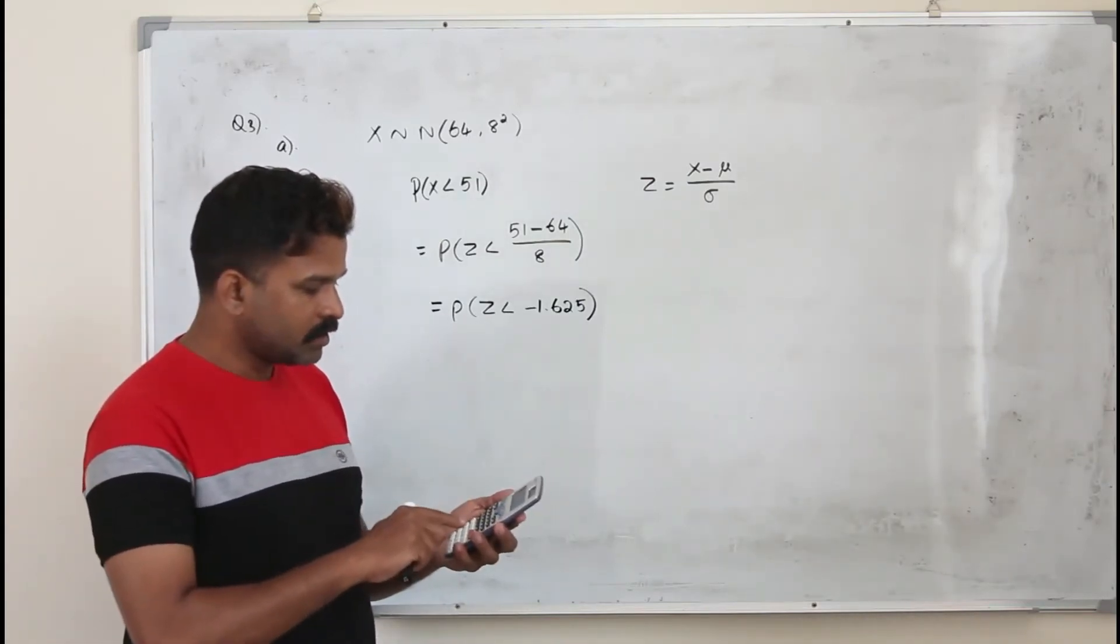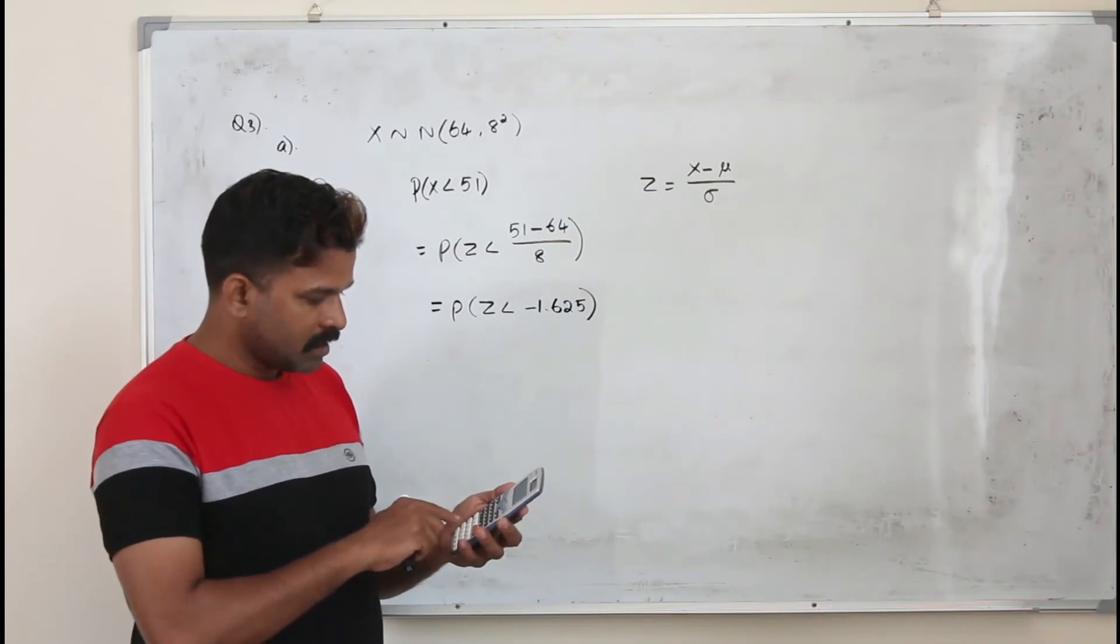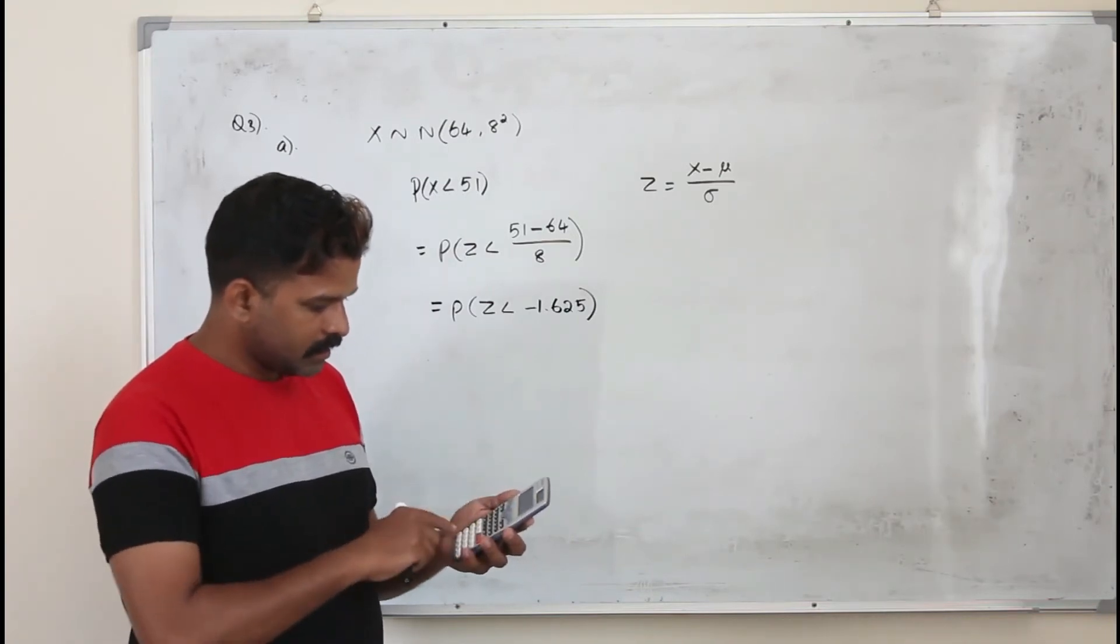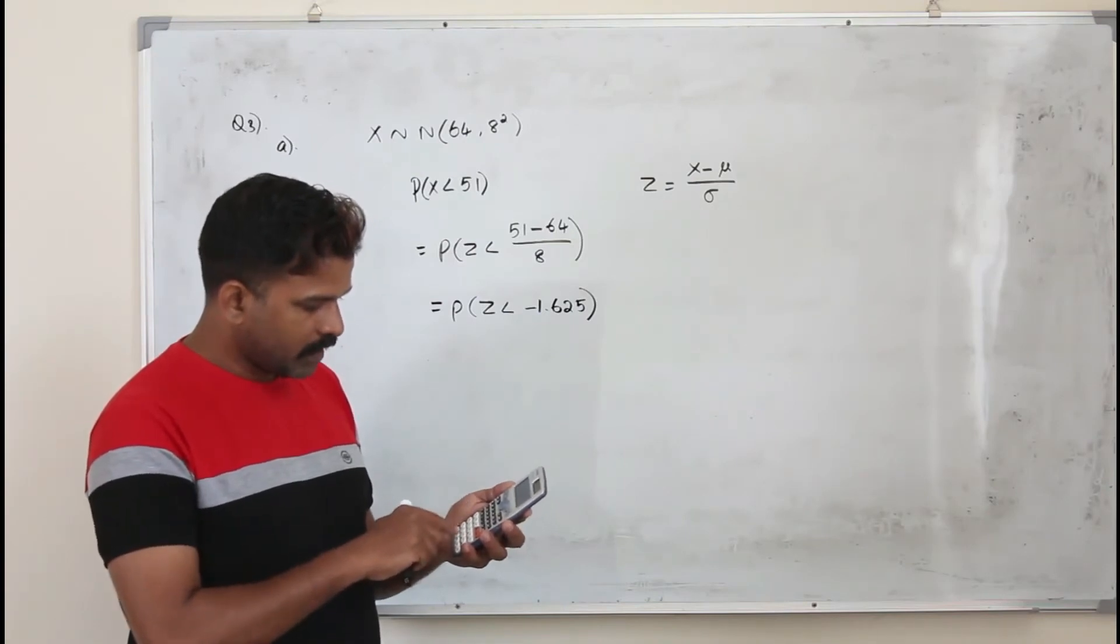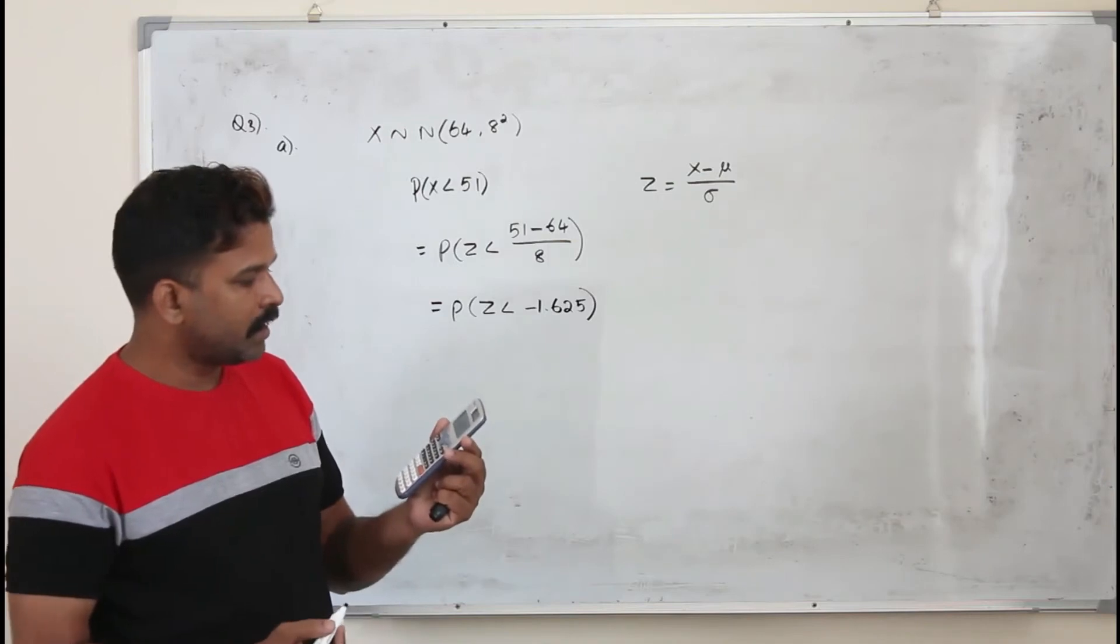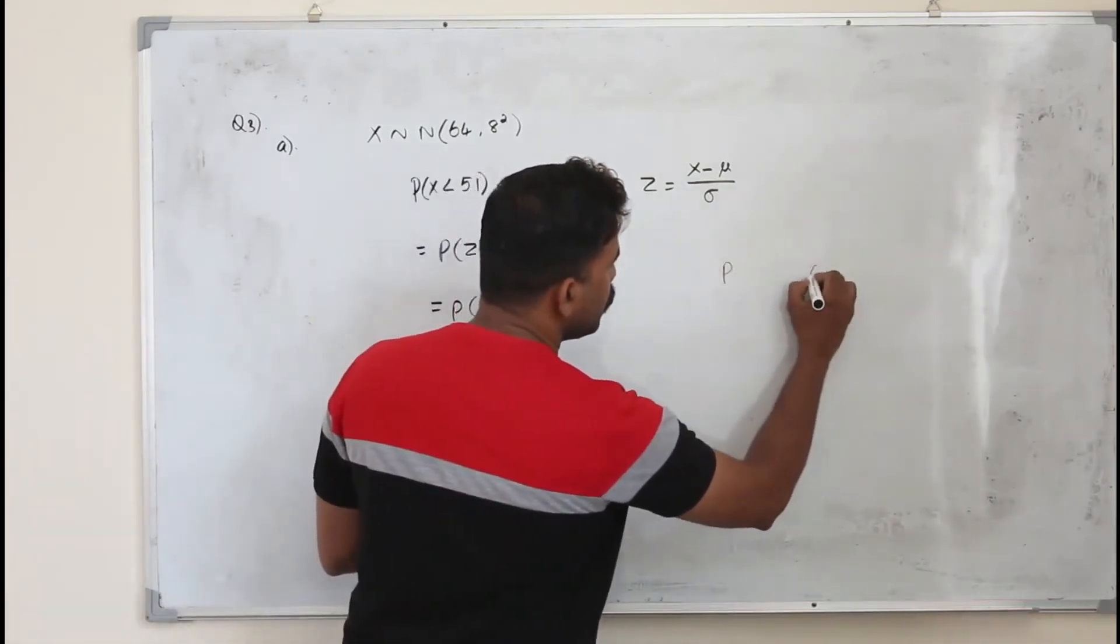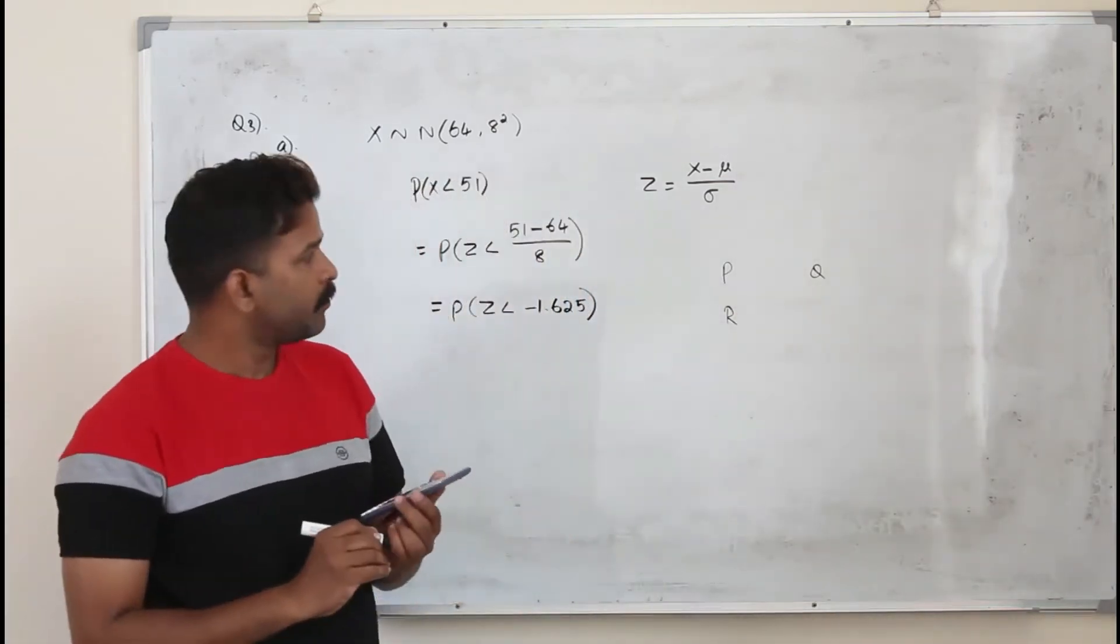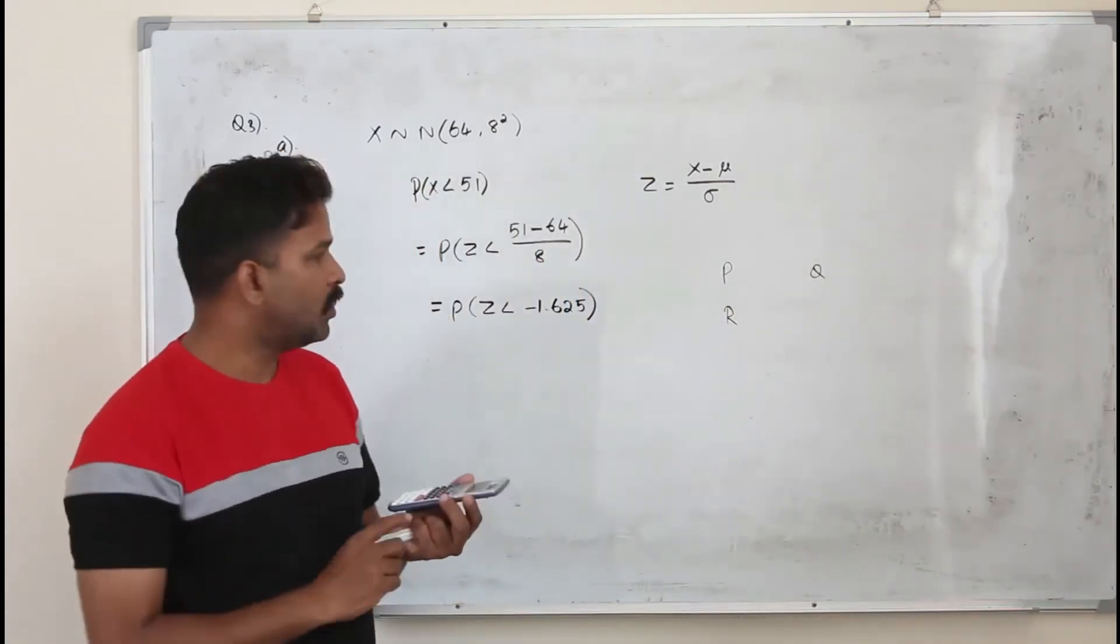So in this calculator you just need to go to stat and look for one variance. And then you find the distribution. There are three types. One is P, Q and R. I will tell you what P, Q, R is.